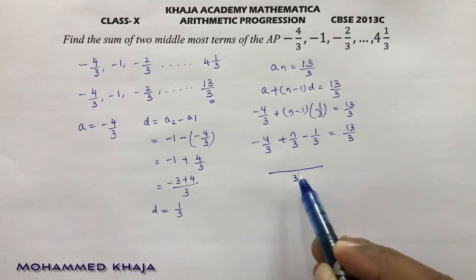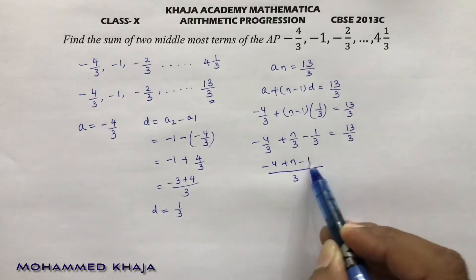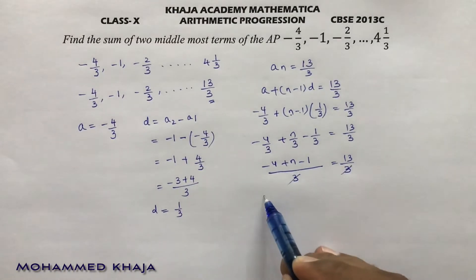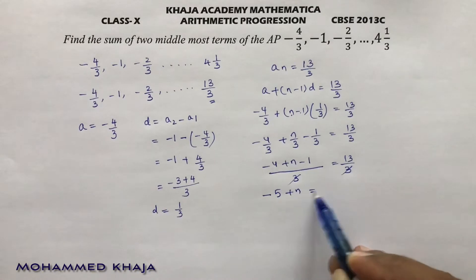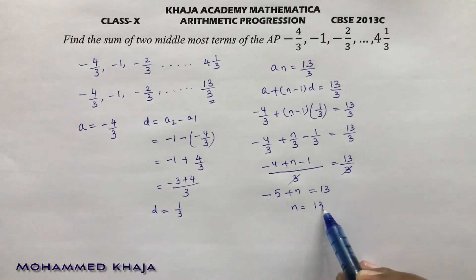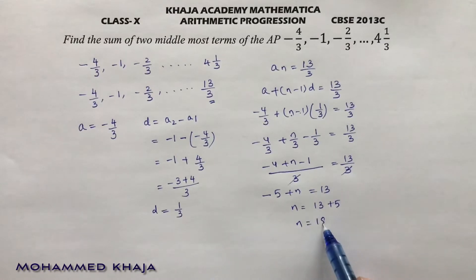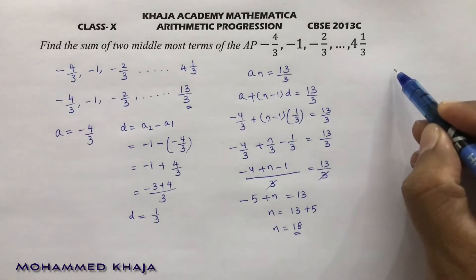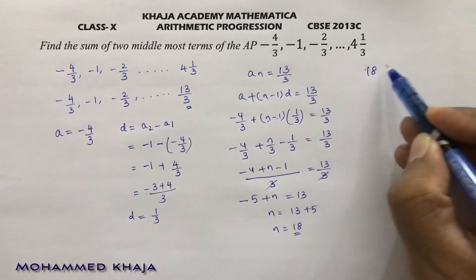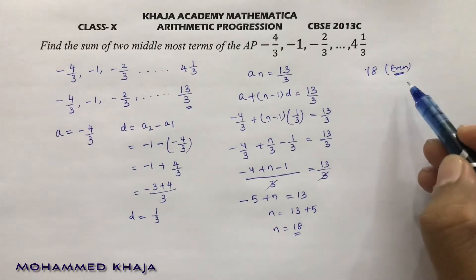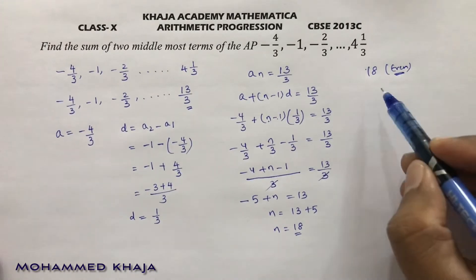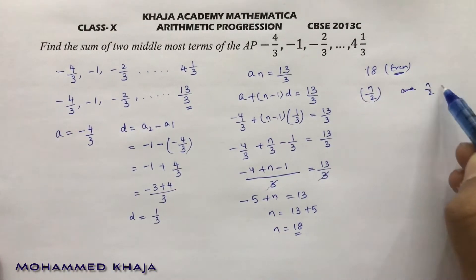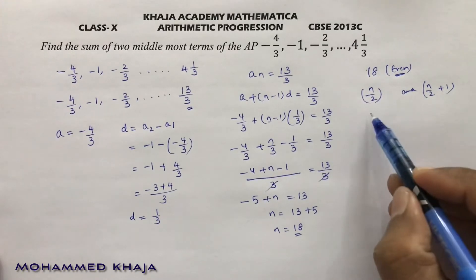Taking LCM as 3: minus 4 plus N minus 1 equals 13. So minus 5 plus N equals 13, giving N equals 18. There are 18 terms in the series. Since 18 is even, to find the middlemost terms the formula is N by 2 and N by 2 plus 1. These are the middlemost observations.